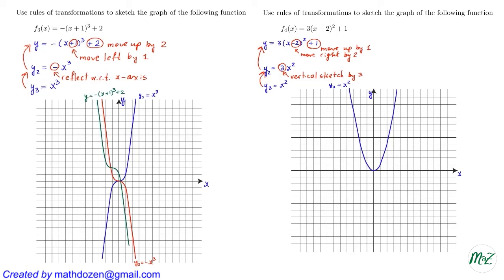Starting with the graph of y3 = x², we stretch it vertically by 3, so every y-coordinate gets multiplied by 3. For example, a point at height 1 becomes height 3. This taller parabola is the graph of y2. Then moving it right by 2 units and up by 1 unit gives the green curve, the graph of y = 3(x - 2)² + 1.